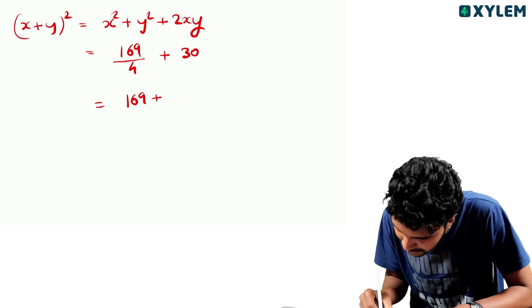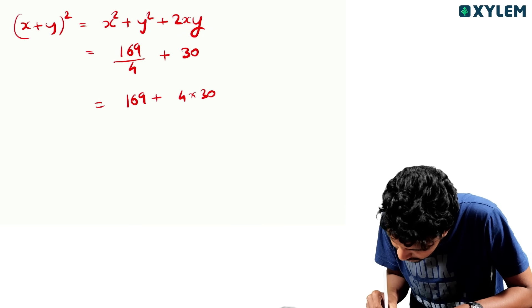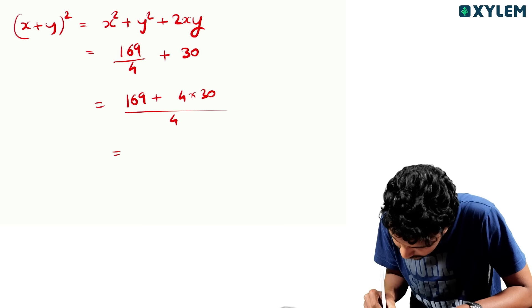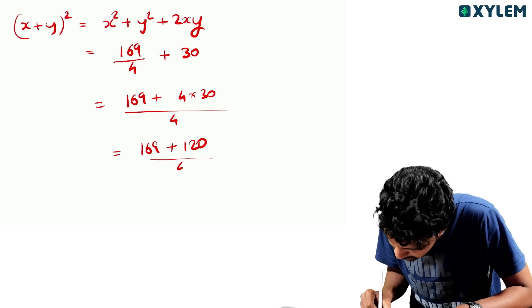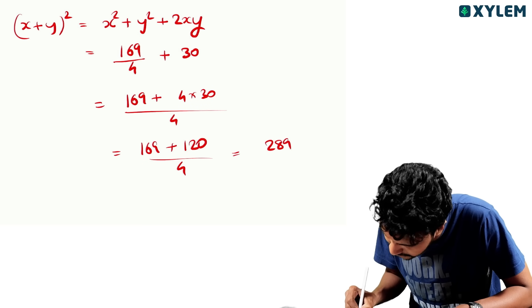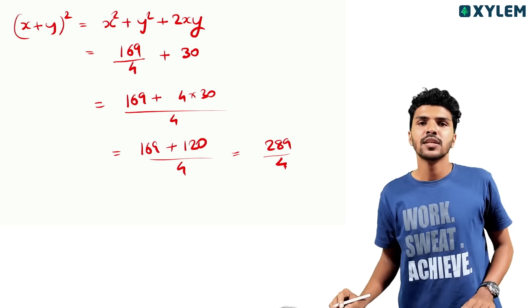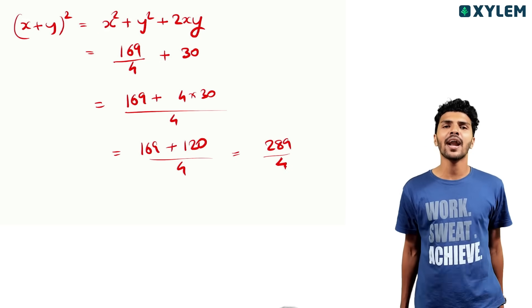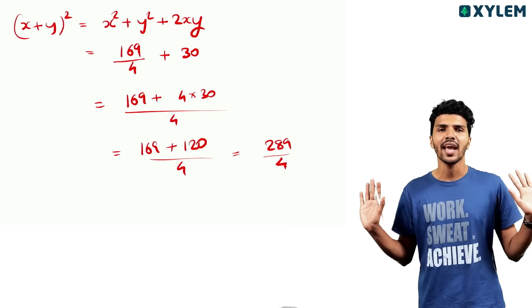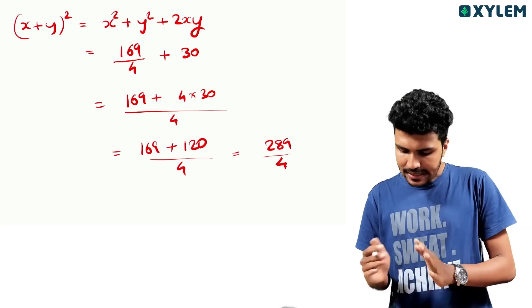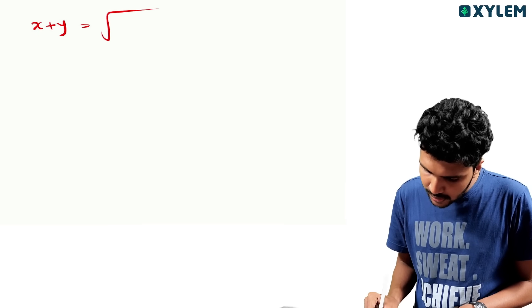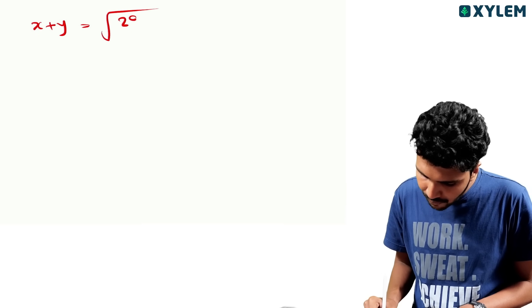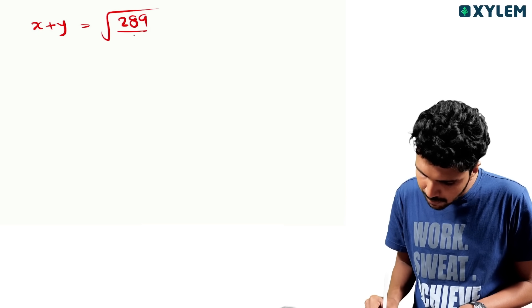That is 169 plus 4 into 30, divided by 4, which equals 169 plus 120 divided by 4, equal to 289 by 4. So x plus y is equal to root of 289 by 4.